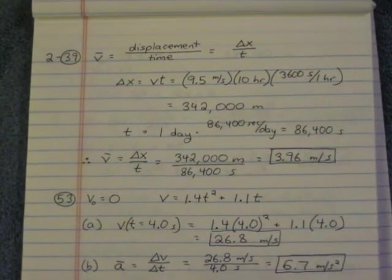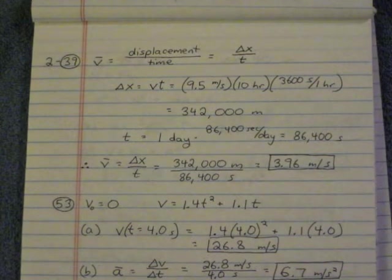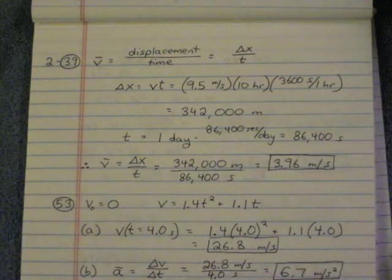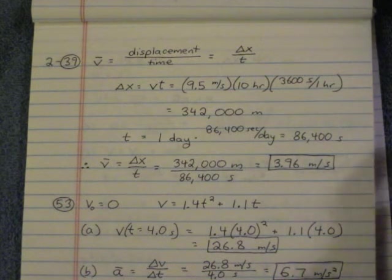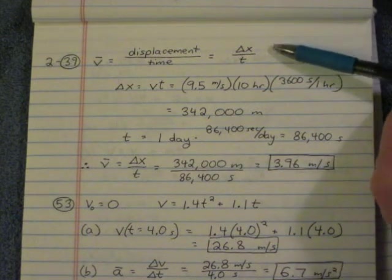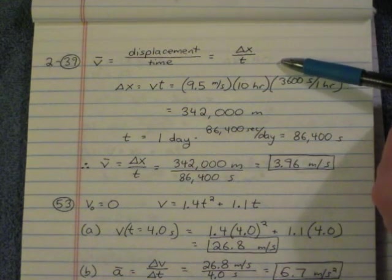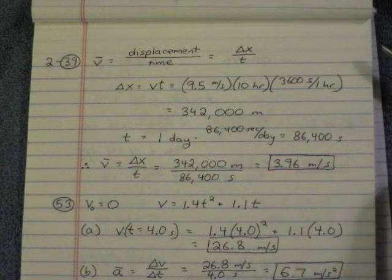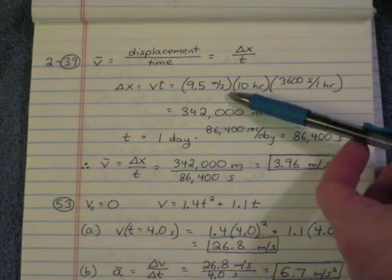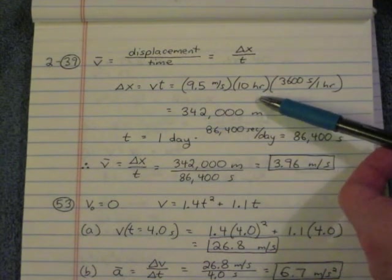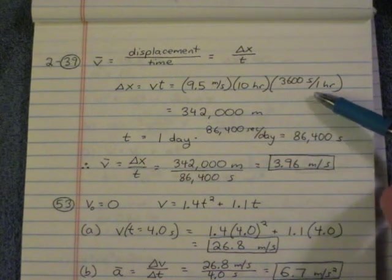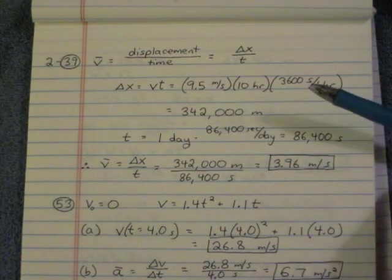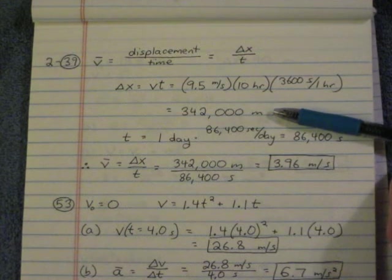Number 39. A dog sled goes straight at 9.5 meters per second for 10 hours. Then they rest for the remainder of the day. What's the average velocity for 24 hours? Okay. Average velocity is displacement over time. Let's figure out what the displacement is. So displacement is, they went 9.5 meters per second for 10 hours. Multiply those together. And we're going to want to turn this into seconds because our speed was given in meters per second. So we get that their displacement was 342,000 meters.